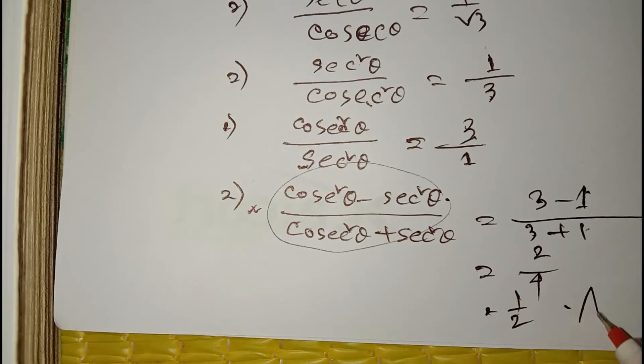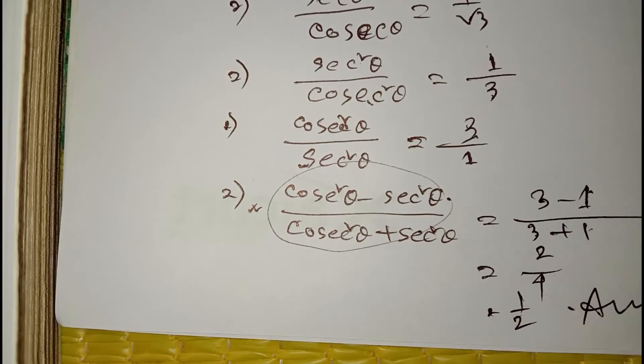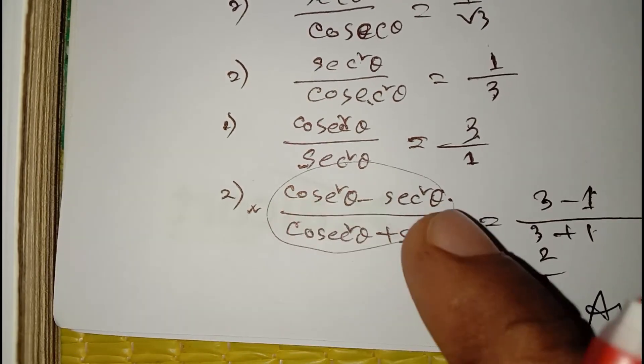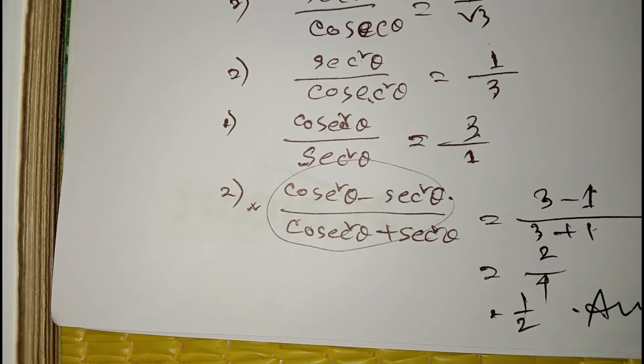So 3 minus 1 equals 2 and 3 plus 1 equals 4, giving us 2 by 4, that means 1 by 2. So our answer is: cosec square theta minus sec square theta divided by cosec square theta plus sec square theta equals 1 by 2.